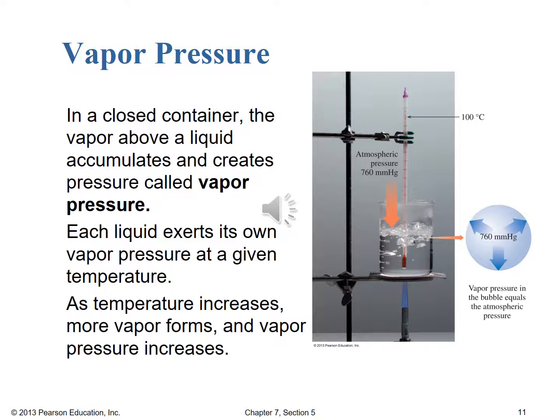Now that we have a good handle on Gay-Lussac's Law, let's talk about vapor pressure. If you think about a closed container, the vapor above a liquid will accumulate and create its own pressure called vapor pressure. In addition to atmospheric pressure, a sealed container — like a closed bottle of water or a carbonated beverage like soda — will have vapor pressure from water escaping into the gas phase, plus carbon dioxide, making things complicated very quickly.